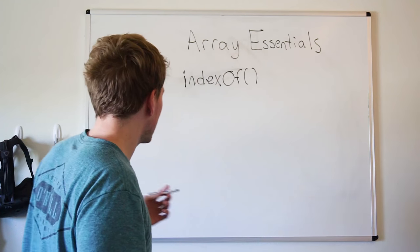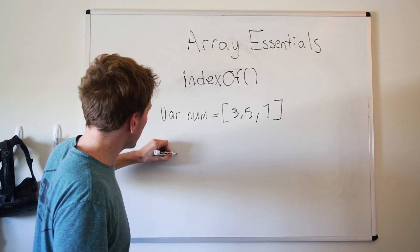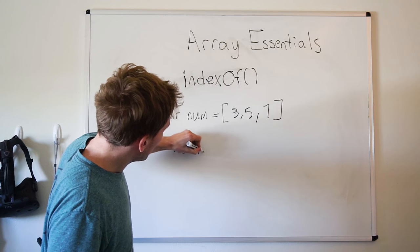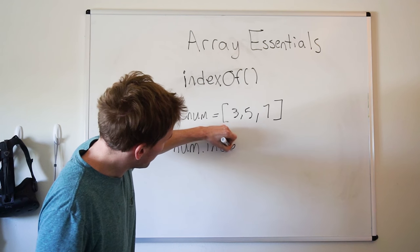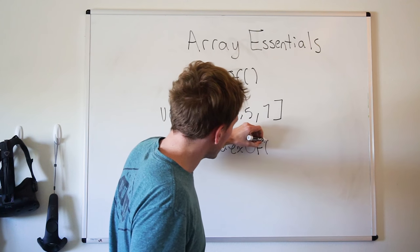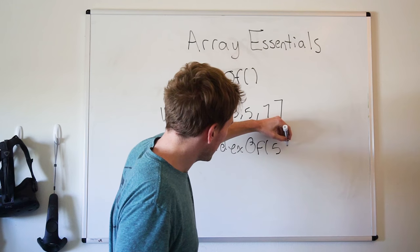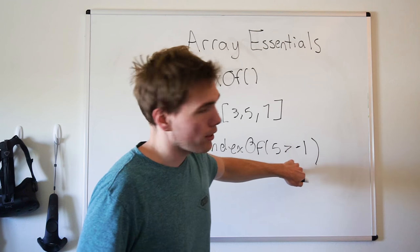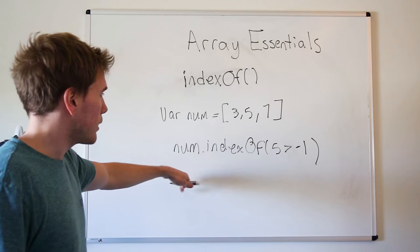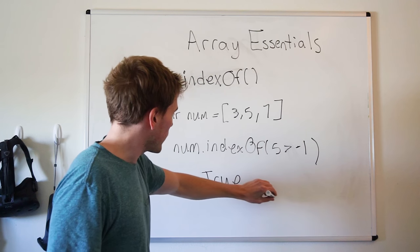What I mean by that is, normally you'd have to loop over this and check. But now you can just say dot indexOf, and then you put in, let's say, 5. Does 5 exist? indexOf of 5 is greater than minus 1 — which just means, does it exist? Is it in there? And this should return true. And that is how this works.